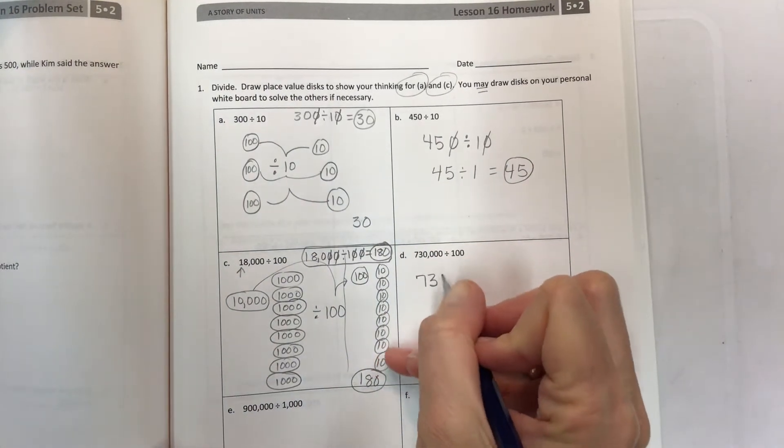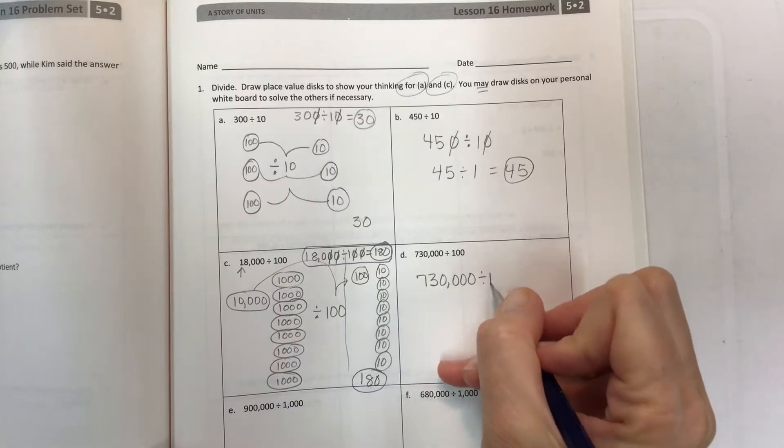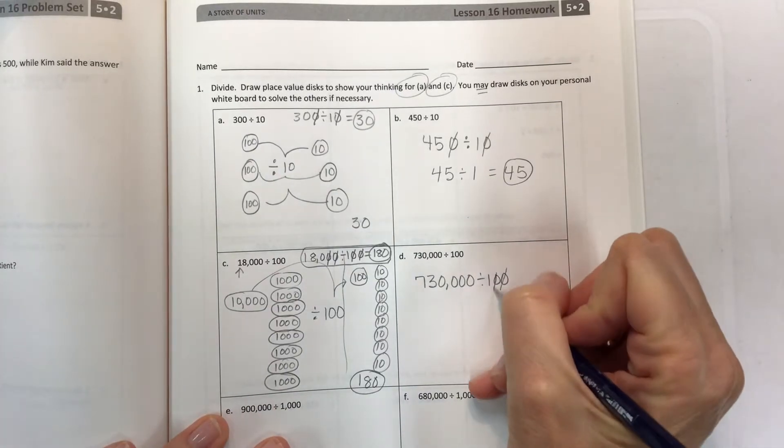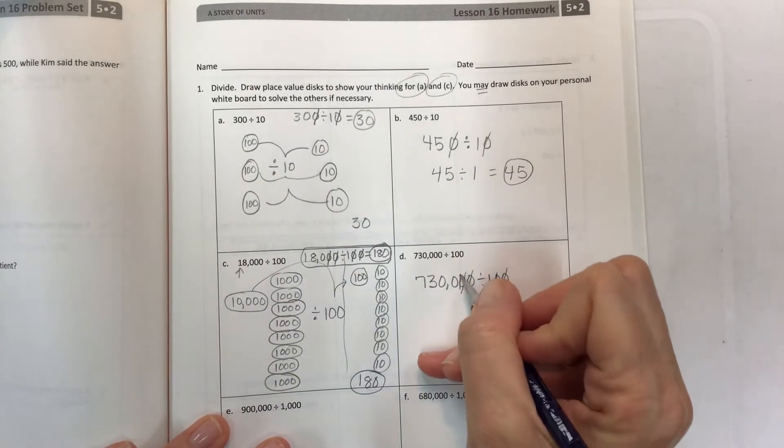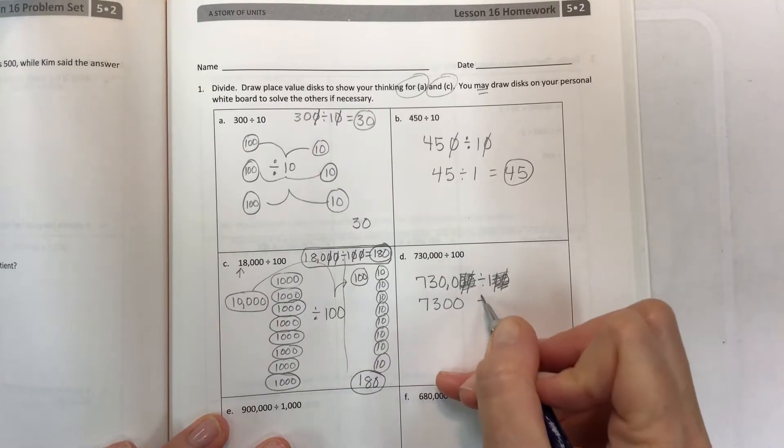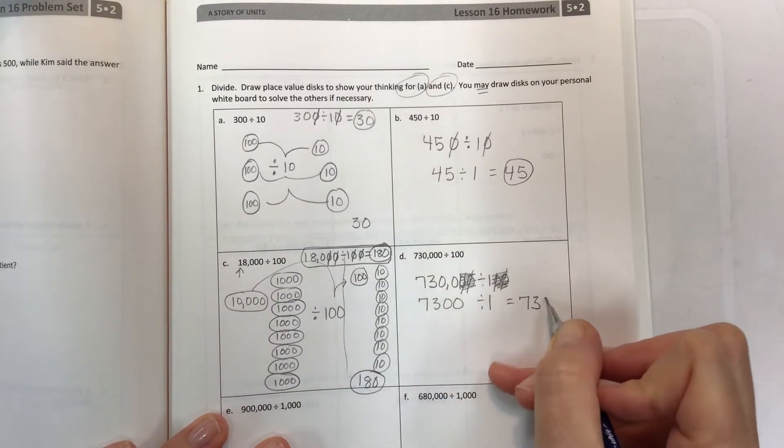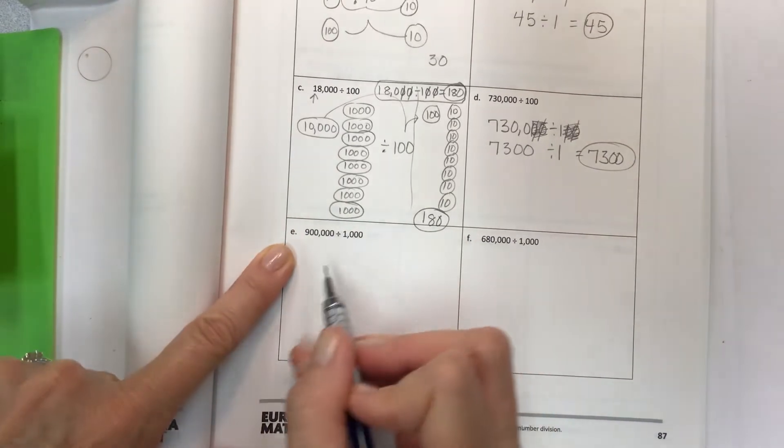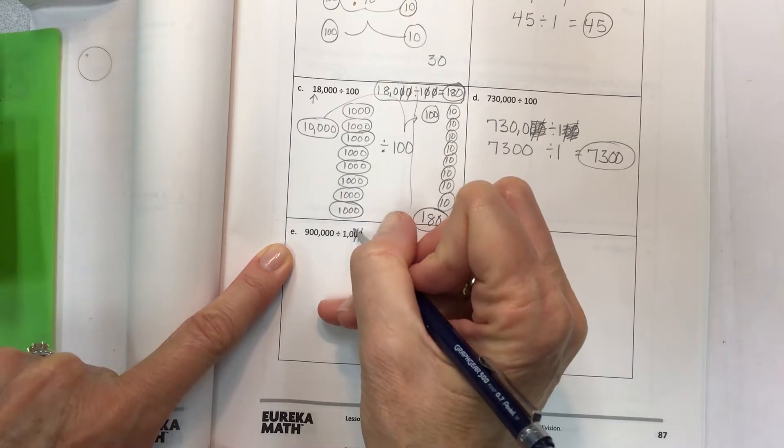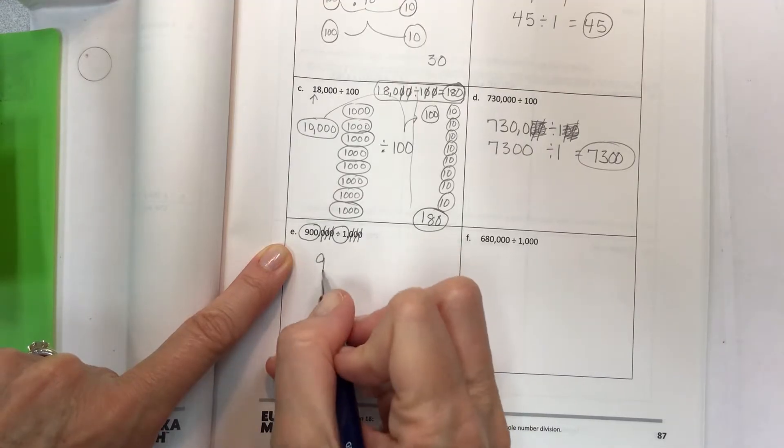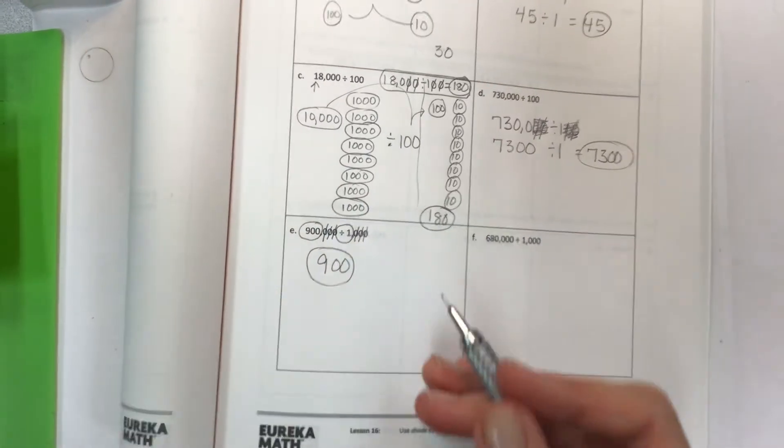Let's move on and use the classic way. 730,000 divided by 100, looking for offsetting or matching zeros. Two here, therefore two here. That leaves us with 7,300 divided by 1, which is 7,300.